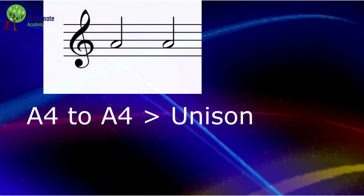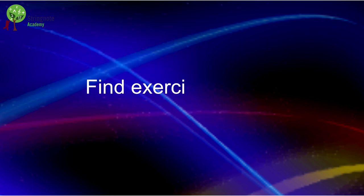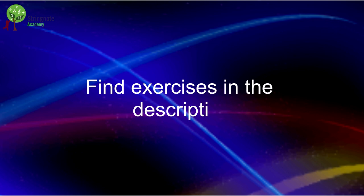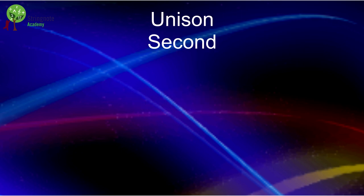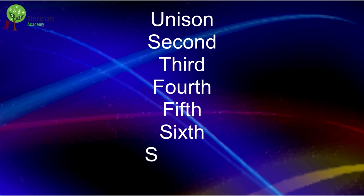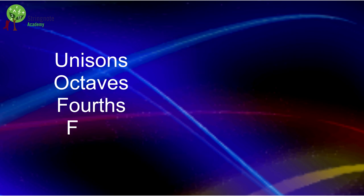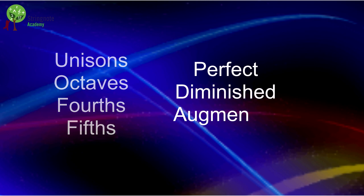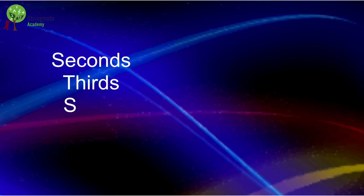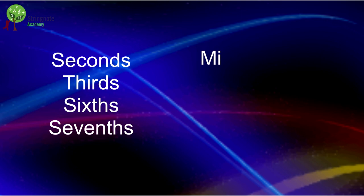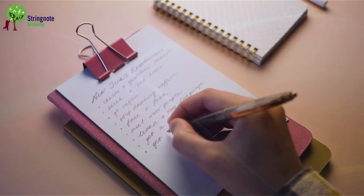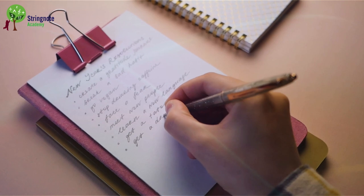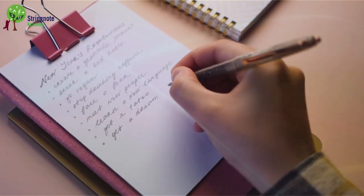Unisons sound the same pitch, unless it is augmented, which we will see later in this video. Now we will talk about the quality of the interval. These are the numbers we know so far: unisons, second, third, fourth, fifth, sixth, seventh, octave. Unisons, octaves, fourths, and fifths can be perfect, diminished, or augmented. Seconds, thirds, sixths, and sevenths can be minor, major, diminished, or augmented. To work out the quality of an interval, we create a table, making sure we list the following 12 intervals, the most conventional.